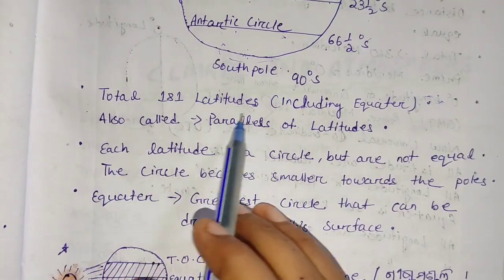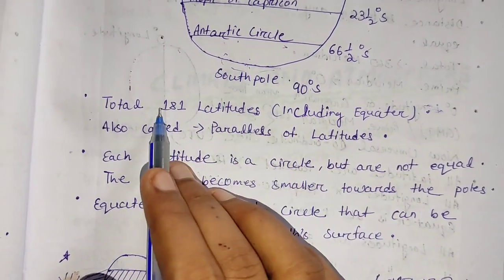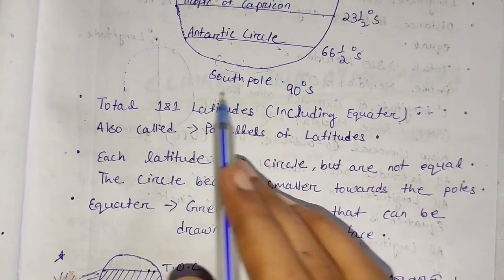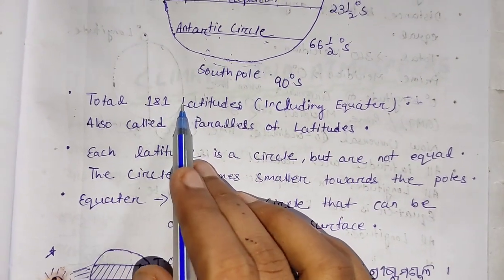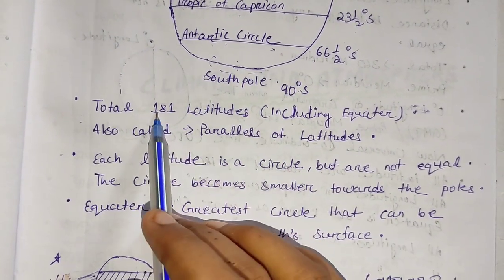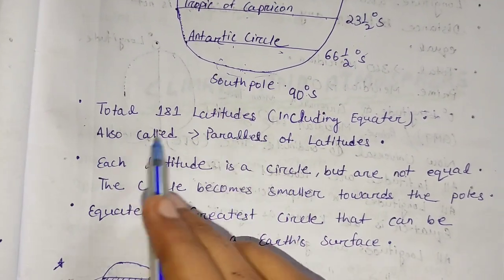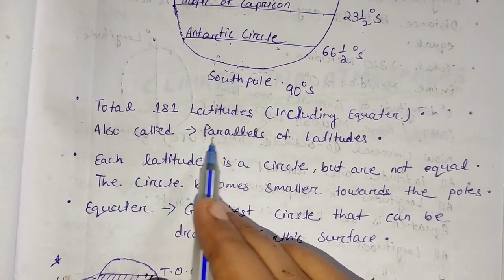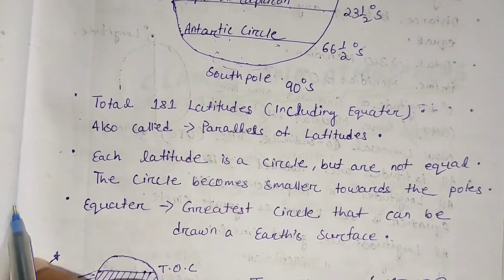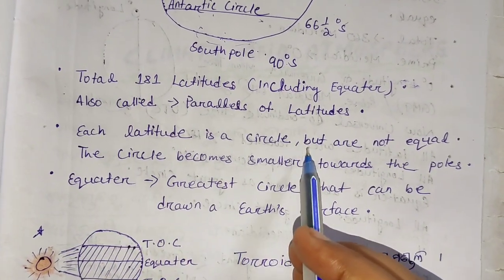The total number of latitudes is 181. The equator counts as one, and the total including both hemispheres is 181. Latitude lines are parallel — the parallel of latitude forms a circle. Each latitude is a circle.